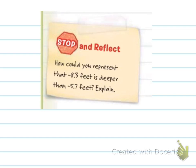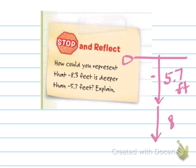So how could you represent negative 8.3 feet is deeper than negative 5.7 feet? How could you explain that it's deeper than negative 5.7? Well, it's further away from zero. This is zero. This is ground level, right? This is zero. And I've dug down 5.7 feet. That's like negative 5.7. To go even deeper, to get to 8.3, that means it's even deeper. Because in negative world, the further away from zero we go, the smaller the number is. In this case, when we're talking about digging a hole, it's the deeper it is.